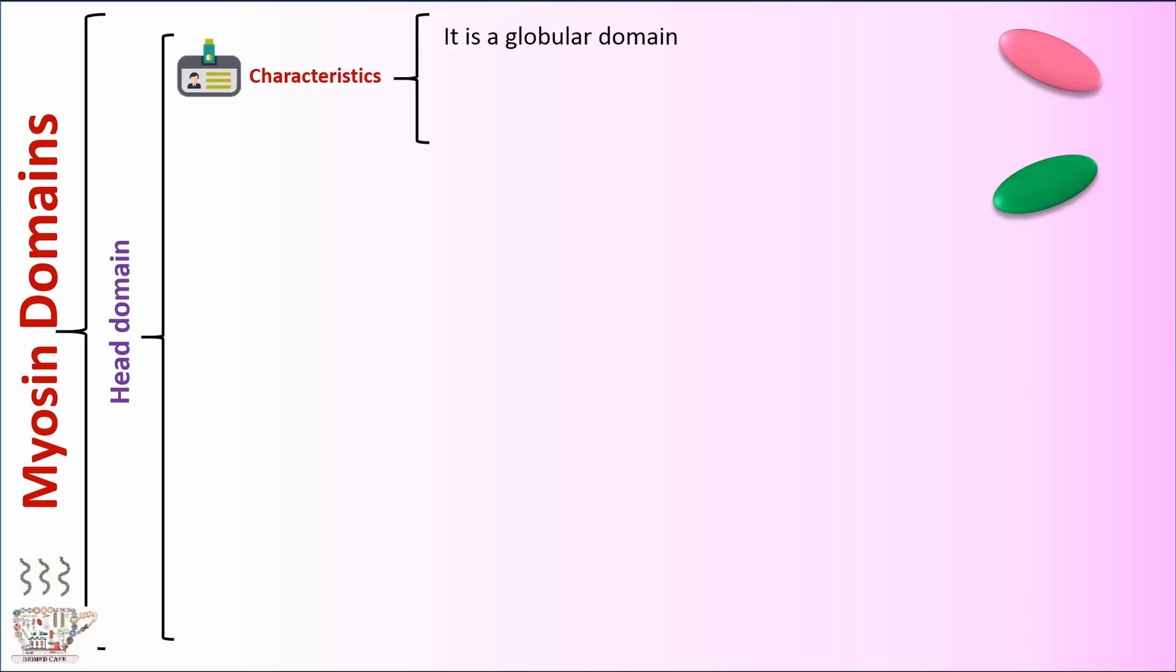Myosin domains. Myosin has three domains. The first domain is head domain. It's a globular domain. Two heads are present in one molecule of myosin.